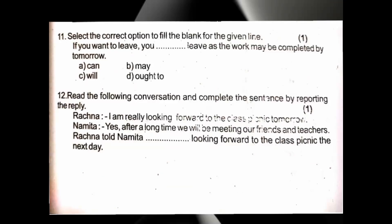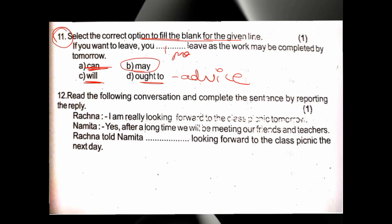Eleventh question: 'If you want to leave, you dash leave, as the work may be completed by tomorrow.' Options: can leave, may leave, will leave, ought to. 'Ought to' is for advice. 'Can' is for ability or capability. 'Will' is for willingness. 'May' is for permission. Since this is a permission context — 'if you want to leave' — the answer is 'may'. Option B: 'You may leave.' So: 'If you want to leave, you may leave, as the work may be completed by tomorrow.'